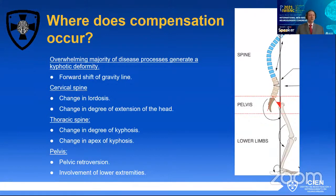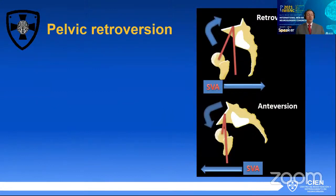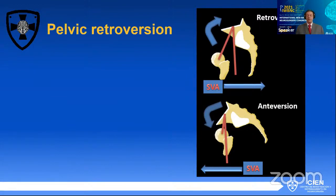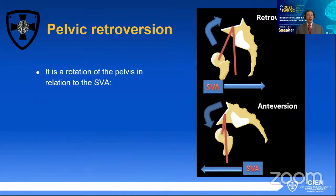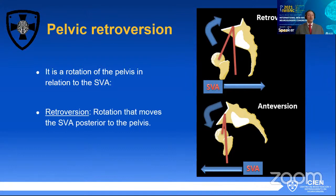So let's see how these compensatory mechanisms work. The most important mechanism, or the one usually used the most by the body, is pelvic retroversion. What is pelvic retroversion? When you talk about retroversion or anteversion, you're talking about a rotation of the pelvis on its own axis, which is going to move the relationship of the SVA or the C7 plumb line with respect to the posterior aspect of the first sacral end plate. Retroversion is a rotational movement that moves the SVA backwards of the posterior corner of the superior sacral end plate.